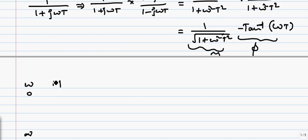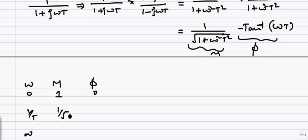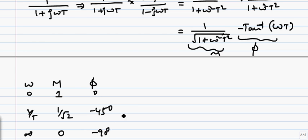When ω = 0, M = 1 and φ = 0°. When ω = 1/T, we get magnitude 1/√2 and φ = −45°. As ω tends to infinity, magnitude tends to 0 and φ tends to −90°.